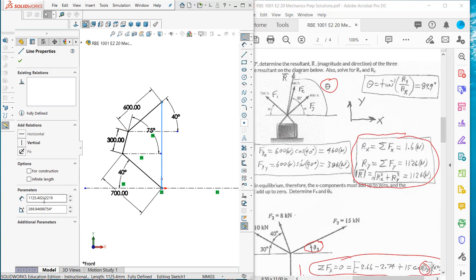If I click on that line, you can see I get 1125 and change. With round off we got 1126. And then the angle says 269. That's 269 from the positive axis going around past 180. So if I subtract 180 from the 269, I get the 89.9.